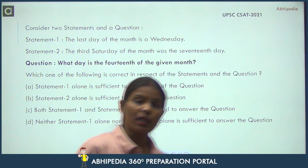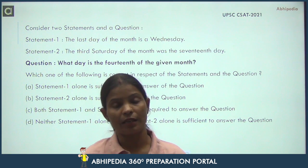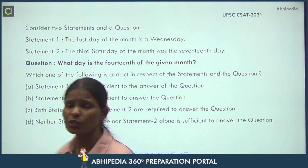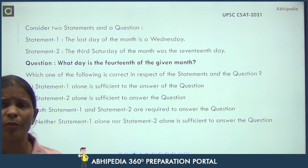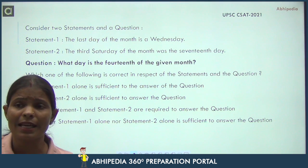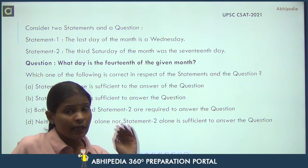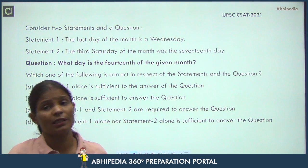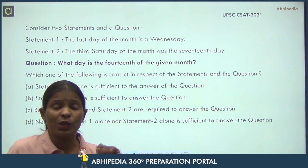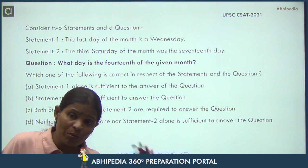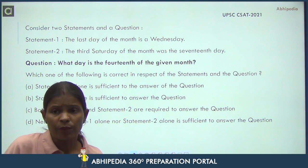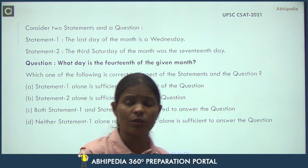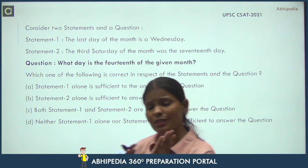In 2021, a data sufficiency question also appeared. The trend has changed — direct calendar questions are rare in the exam now. Questions come in data sufficiency or statement-based form. Options may be like: first and second are sufficient, first and third, second and fourth, etc.